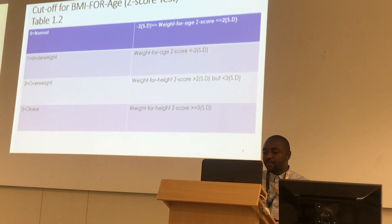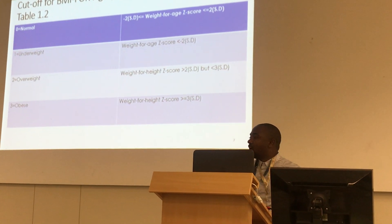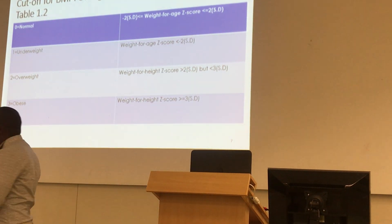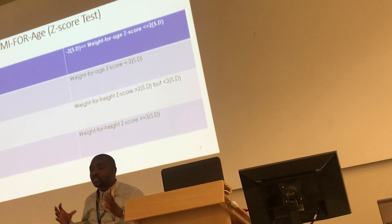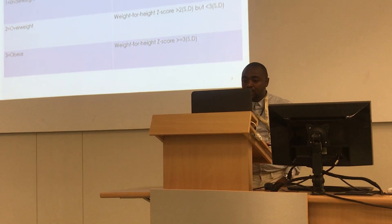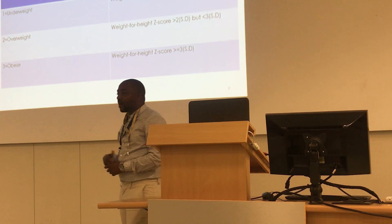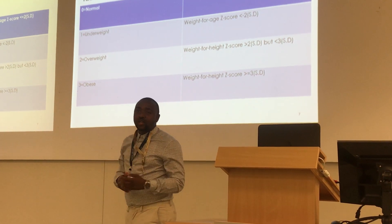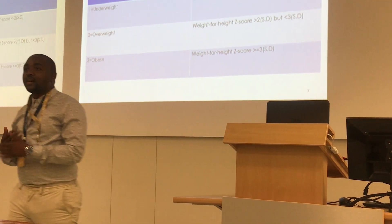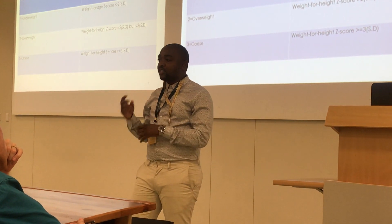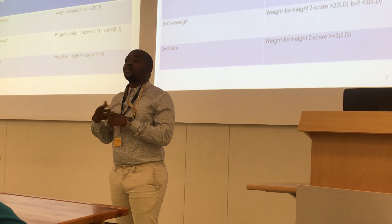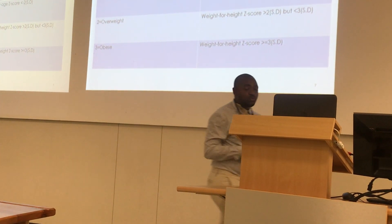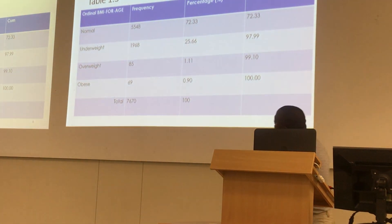Height for age is a measure of linear growth retardation. The same understanding as percentiles was used to create the BMI cutoff for children under the age of five. I used the variable coding starting from 0 because the software I was using — Stata — needs a variable coded 0 to establish a reference category. That's how I came about calling these variables from 0 to 3.